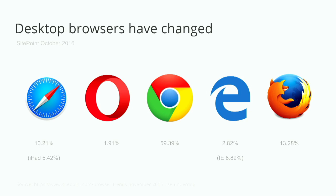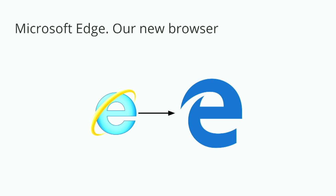Even the browsers our customers are using every day have changed. Today we have Chrome as market leader. We actually have Safari — if we include iPads, it has a pretty significant desktop market share because iPads have grown so big. For Microsoft, our Edge market share is still growing. We're still trying to kill the remaining bits of IE, but one day I'm sure we'll succeed. As part of our new effort of reinvesting in the web, we decided to build Edge and basically reinvent our approach to how we build for the web.